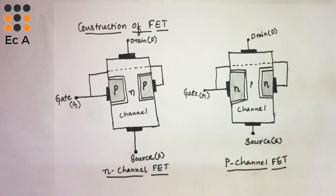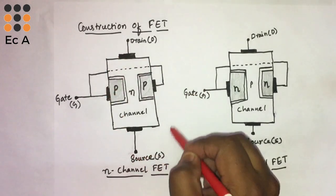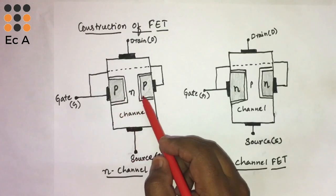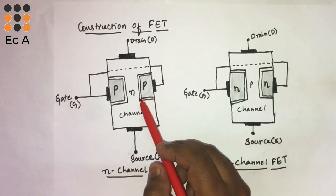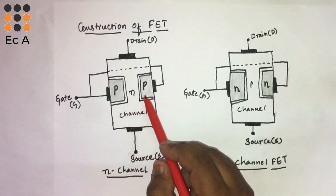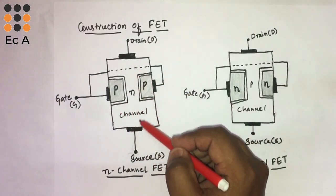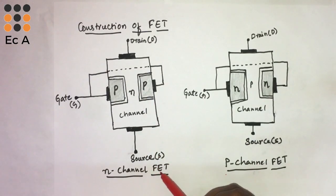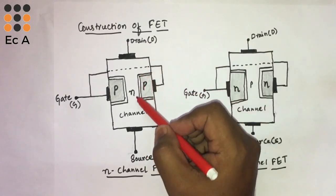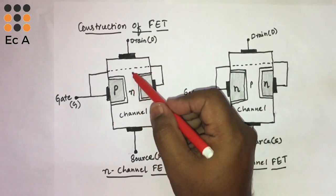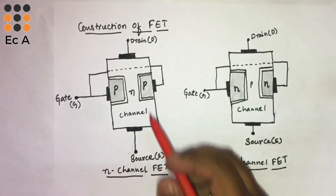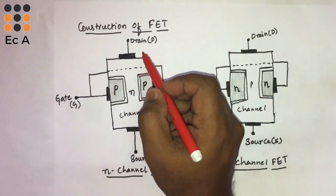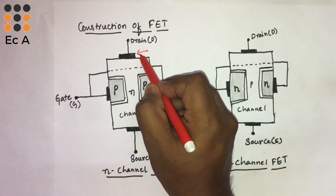Now we will see the construction of FET. FET can be classified as N-channel FET and P-channel FET. This figure shows the structure of N-channel FET. It consists of two P-type semiconducting materials which are heavily doped. The region between the P-type is known as the channel. Since the channel is N-type, it is known as N-channel FET. The channel provides the path for electrons to flow. It consists of three terminals, which we call electrodes, and these electrodes are known as ohmic contacts.